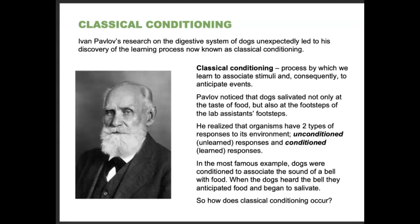First we'll start with classical conditioning. Ivan Pavlov's research on the digestive system of dogs unexpectedly led to his discovery of the learning process now known as classical conditioning — many of you might have heard people talk about Pavlov's dog. Classical conditioning is a process by which we learn to associate stimuli and consequently to anticipate particular events. Pavlov noticed that dogs salivated not only at the taste of food, but also at the footsteps of the lab assistants as they approached. He realized that organisms have two types of responses: an unconditioned (unlearned) response, and a conditioned (learned) response.